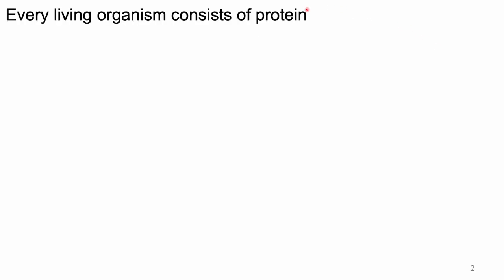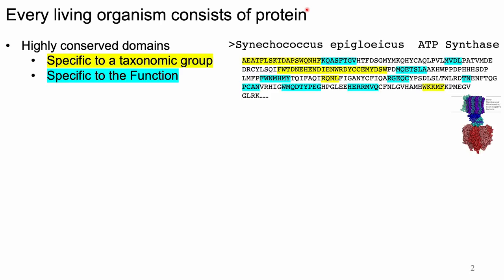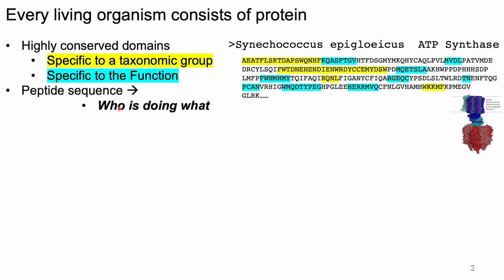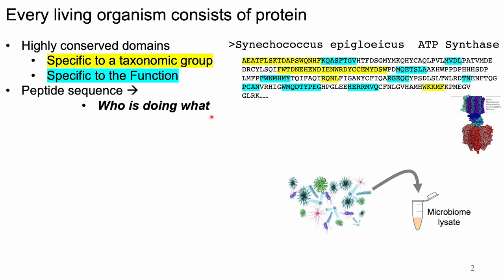Every living organism has a large percent of cellular carbon and nitrogen dedicated to proteins. If we look at an example of a protein sequence, we know that there are highly conserved domains that are specific to a taxonomic group, as indicated here in yellow. And there are domains that are specific to functions due to folding requirements or catalytic sites. That means in many cases that the peptide sequence can tell us who is doing what at the time of collection. This general concept supports the simultaneous analysis of a complex community like a microbiome.